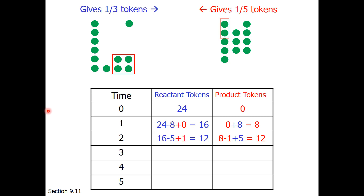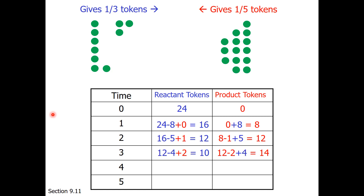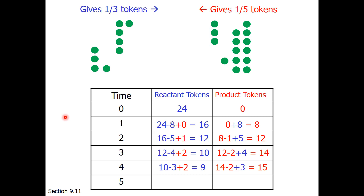After exchange 3, we are now at 10 reactant and 14 product tokens. One third of 10 is 3 tokens forward. One fifth of 14, rounding down, is 2 tokens reverse. We put 3 forward and 2 in reverse.